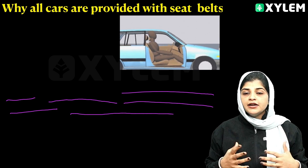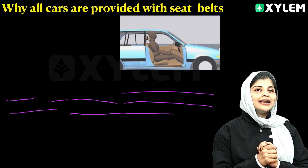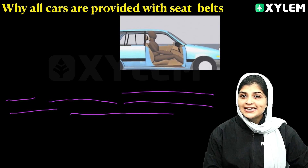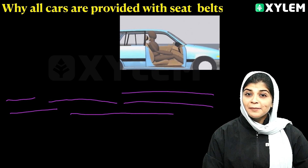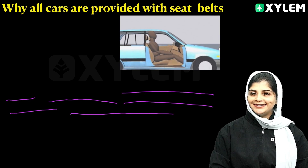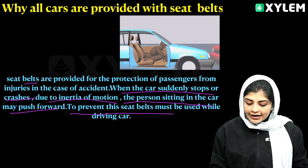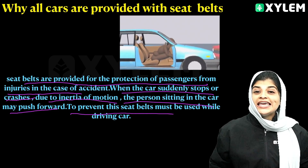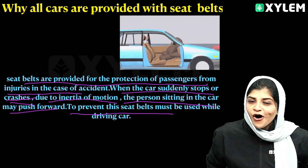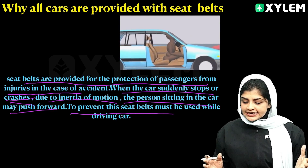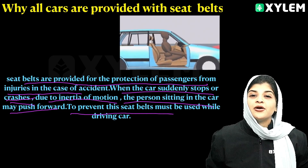It is due to inertia of motion. When the car suddenly stops or crashes, due to inertia of motion the person sitting in the car may push forward. Seatbelts are provided for the protection of passengers from injuries in the case of an accident. Seatbelts must be used while driving a car.